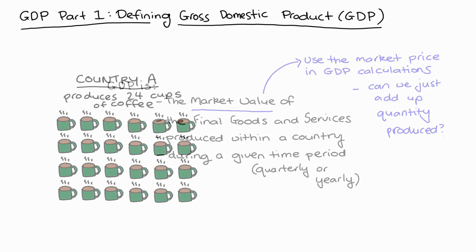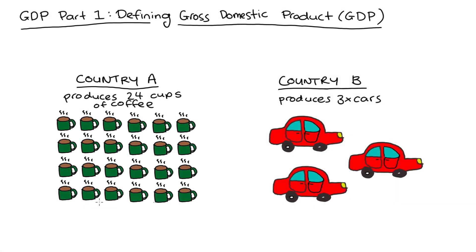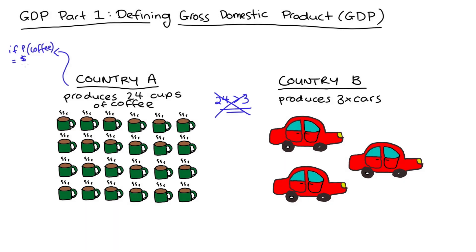For instance, compare country A that makes 24 cups of coffee to country B that makes three cars. If we only take into consideration the number of goods, it looks like country A is more productive than country B because 24 is greater than three. But that can't be correct, because we're not taking into consideration the fact that making a car is somehow a bigger deal than making a cup of coffee. So we weight the number of goods and services that we produce by the market price, and in that way we're including a consideration of the valuation of the good or service.